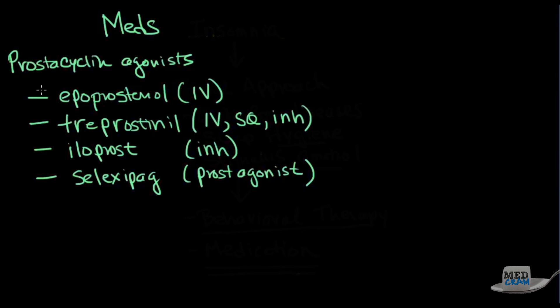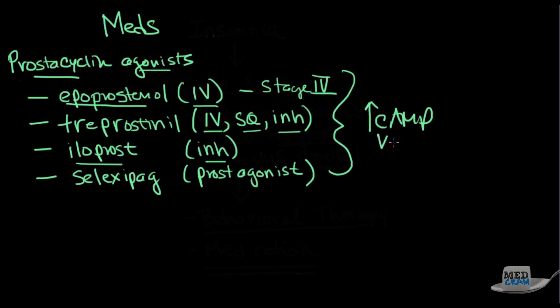The first category is the prostacyclin agonists. So this is like epoprostenol IV, which is indicated for stage IV. There's treprostenol, which can come IV, sub-Q, or inhaled. There's iloprost, which comes inhaled. And then there's these prostacyclin agonists, which are not really prostacyclins, like selexipag, which all of these things stimulate the prostacyclin receptor and in effect cause an increase in cyclic AMP and therefore vasodilation.